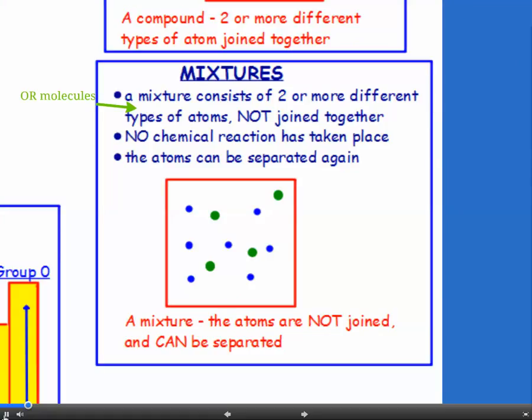Mixture. A mixture consists of two or more different types of atoms not joined together. So no chemical reaction has taken place and the atoms can be separated again. So the diagram shows we've got different types of atoms present, but they're not joined and they can be separated.